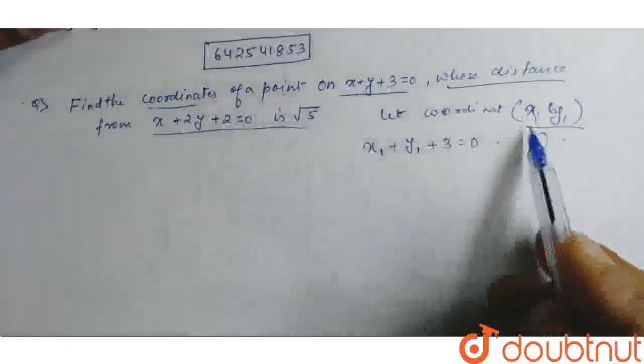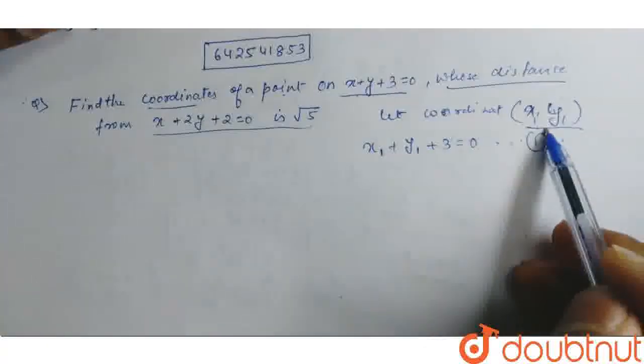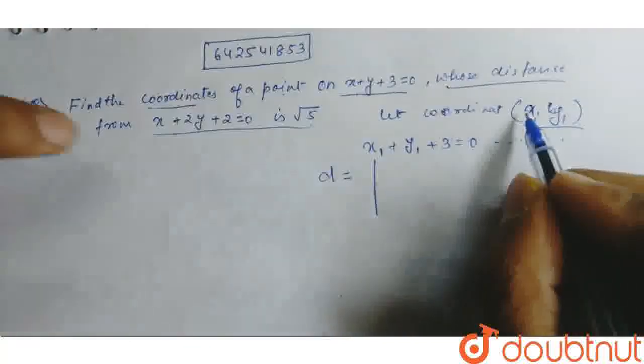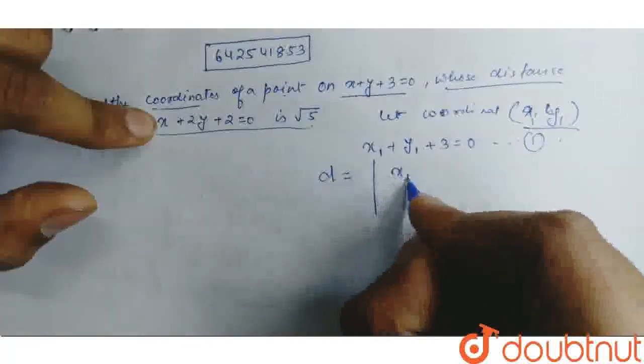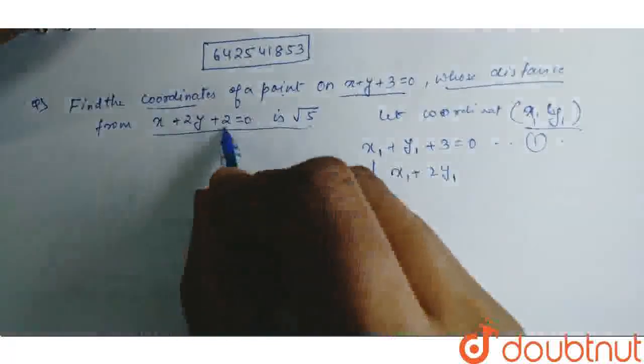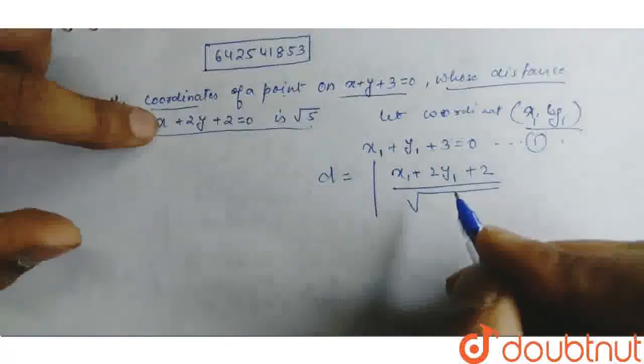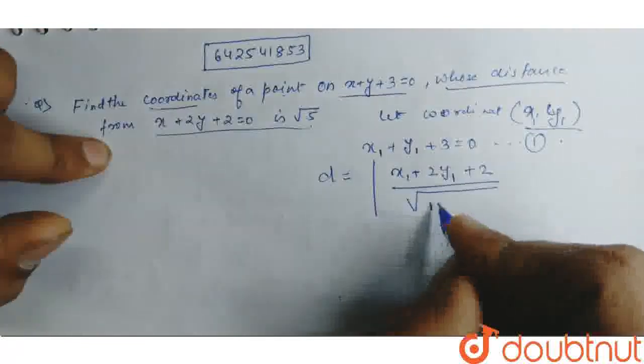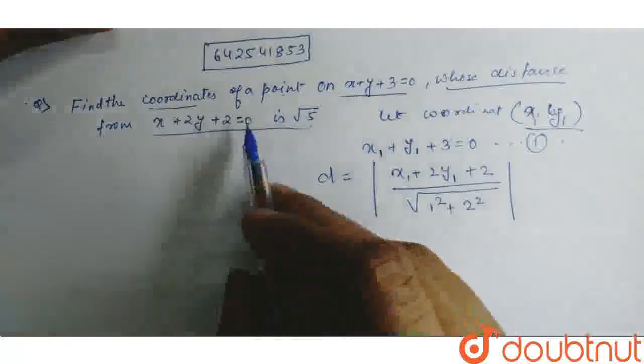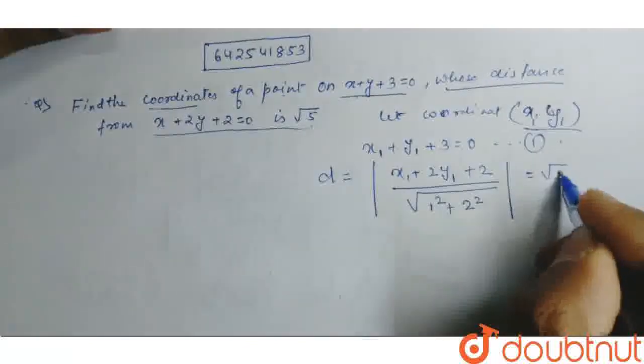Now, we know that the distance from this is root 5. So, the distance formula is x1 plus 2y1 plus 2 over root of... Coefficient of x is 1, 1 square. Coefficient of y is 2, 2 square. And the distance D is root 5.